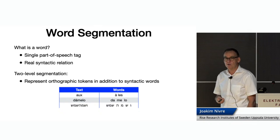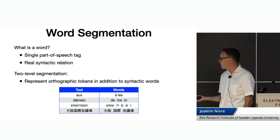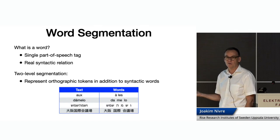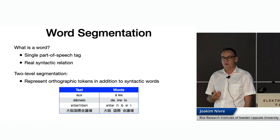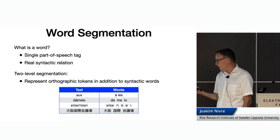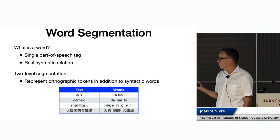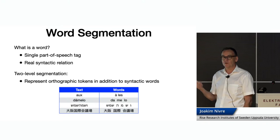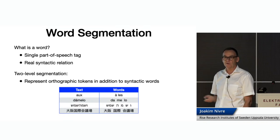And of course there are many languages that don't use spaces at all. This is Japanese — 'Osaka Convention Center' — and my Japanese colleagues debate how to recognize words in Japanese because it's quite difficult. UD doesn't give the solution to all these problems, but it provides a framework where you can represent both these levels.